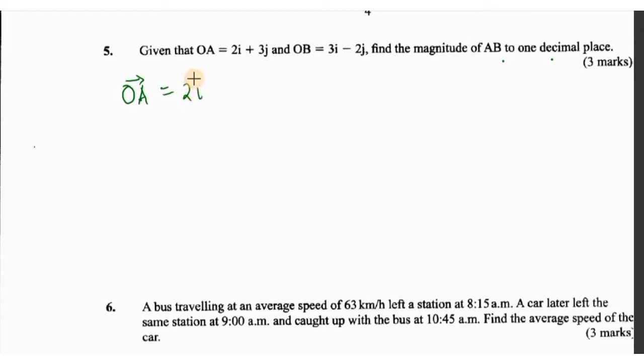We are told OA is 2i plus 3j, and we can write this as a column vector, and that is (2, 3). The same can also apply for vector OB. So the position vector of B is 3i minus 2j, and this can also be written as a column vector, and that is (3, -2).